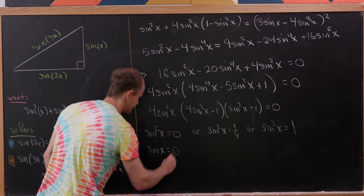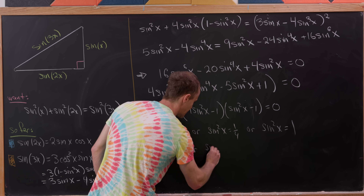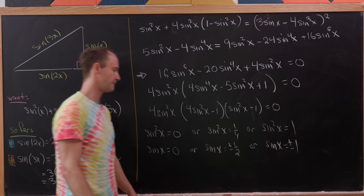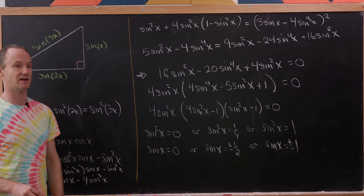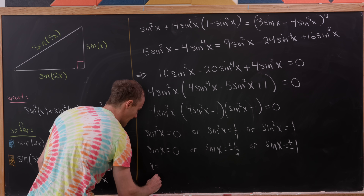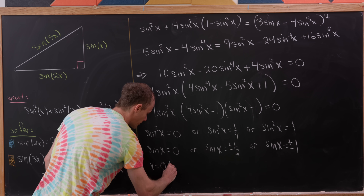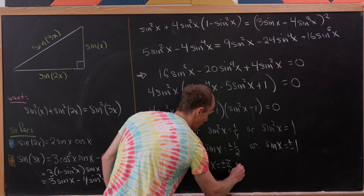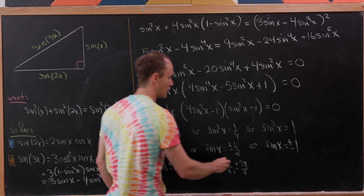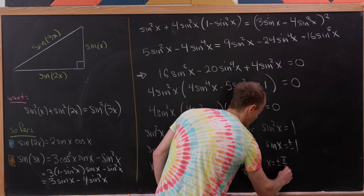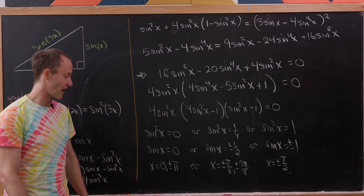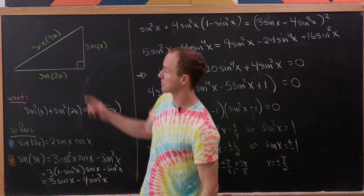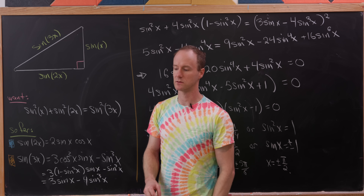These are all well-known values of x. For sine x equals 0, we have x equals 0 or plus or minus pi. For sine x equals plus or minus one half, we have x equals plus or minus pi over 6, or plus or minus 5 pi over 6. For sine x equals plus or minus 1, we have x equals plus or minus pi over 2. Those are all the values of x between negative pi and pi that make the original triangle a right triangle. And that's a good place to stop.